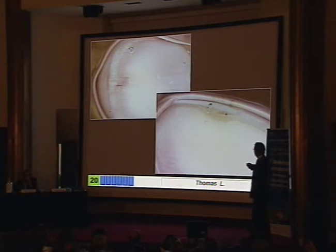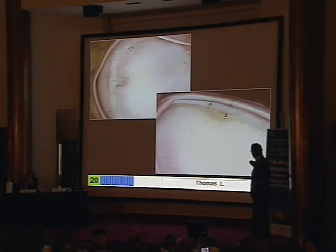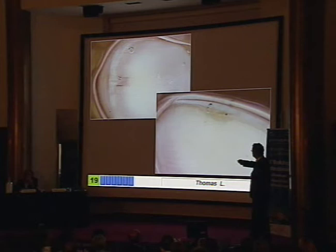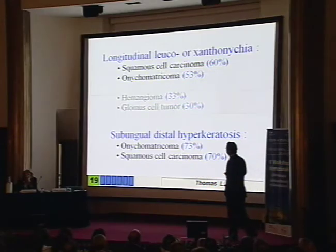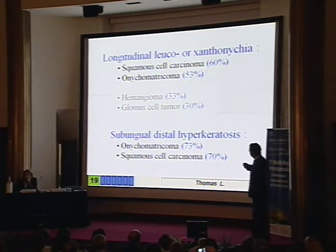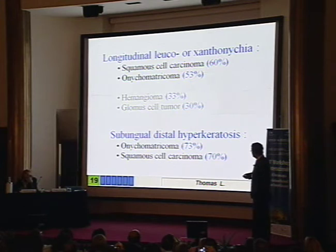Very often, what you see is a thickened nail plate with something underlying it, and very often purpuric spots. You can also see that some vessels are thrombosed, and that the band is yellowish or whitish — but could be black also in Bowen's disease. So this is very highly in favor of squamous cell carcinoma or onychomatricoma.